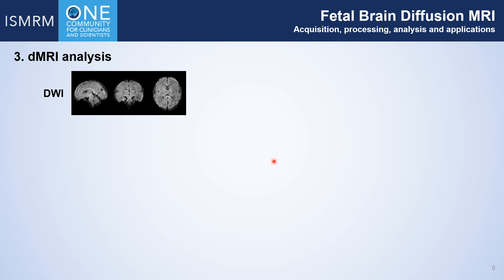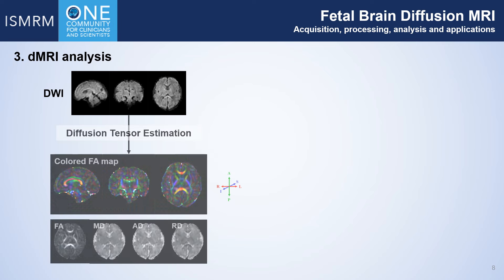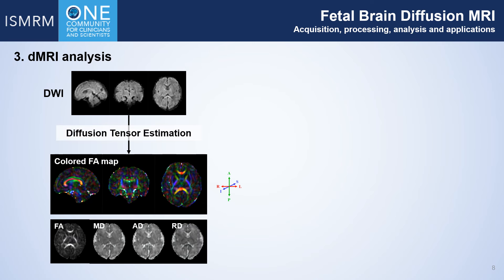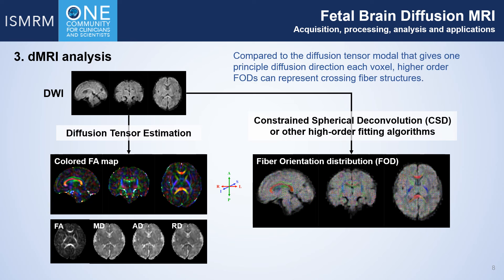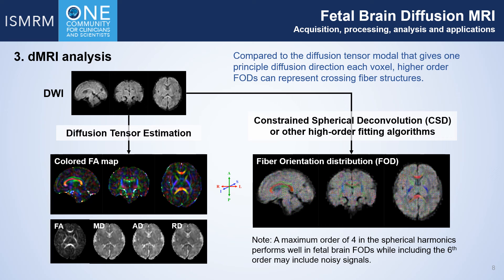After obtaining diffusion-weighted images with desirable quality, we can use dMRI models to characterize the tissue microstructure. The diffusion tensor model gives one principal fiber direction in each voxel and uses four metrics to depict directional water diffusivity and anisotropy. Higher-order algorithms, such as constrained spherical deconvolution, can derive more detailed fiber orientation distributions, enabling the estimation of crossing fibers. A maximum harmonics order of 4 is usually appropriate in fetal brain analysis, because complex fiber orientations haven't developed in the fetal brain, and higher orders may include noisy signals.